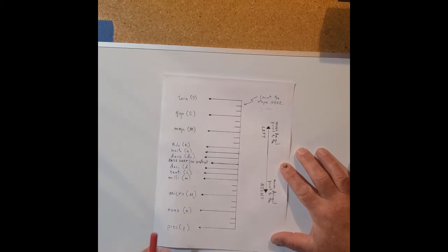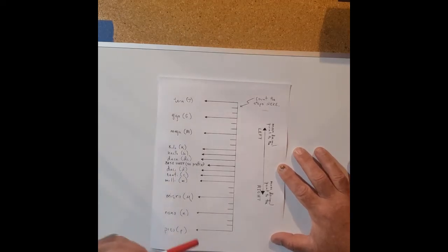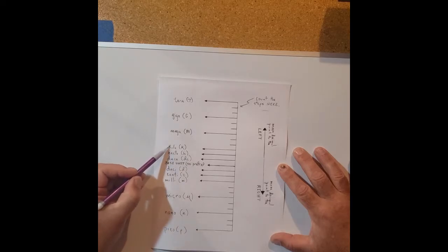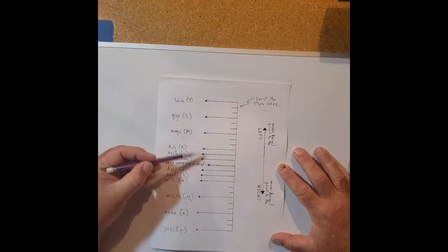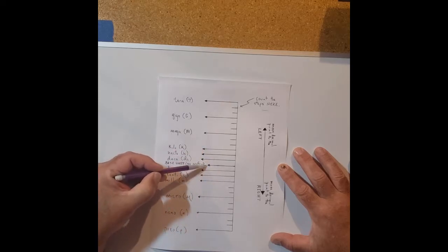I just want to point out real quick that what we did yesterday included the prefixes kilo through milli only, and when we put those on a metric ladder they're only one rung apart because each prefix is just 10 times bigger or 10 times smaller than the other.